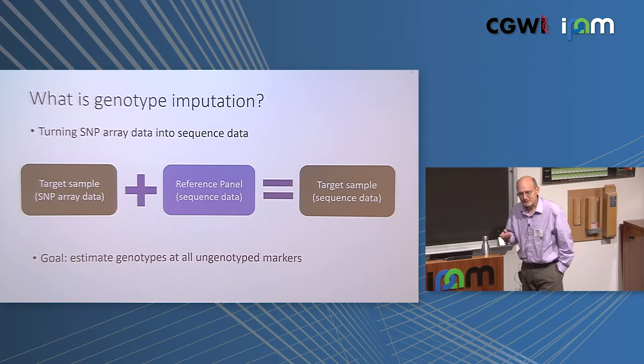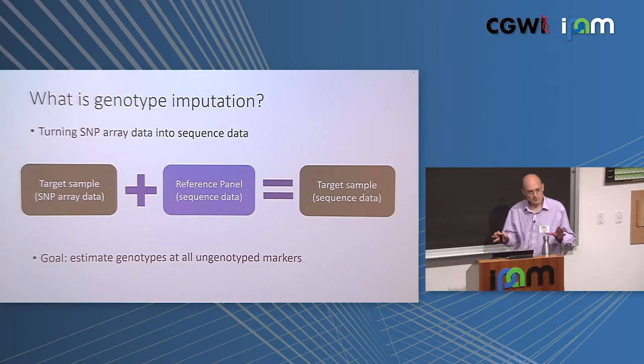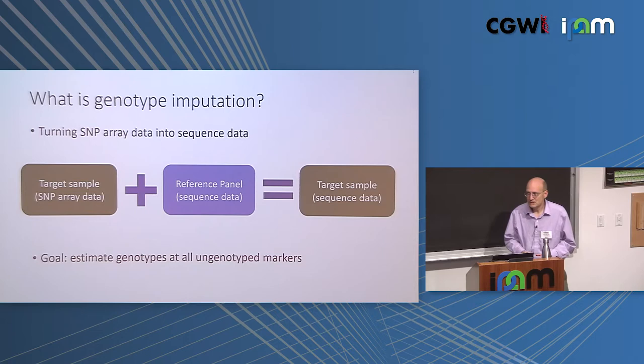This talk is about genotype imputation, which is a term that different groups of researchers use in somewhat different ways, and it can be very confusing if you don't know exactly what we mean by this. What we're talking about in this talk is the technique whereby we take SNP array data and convert it into sequence data.